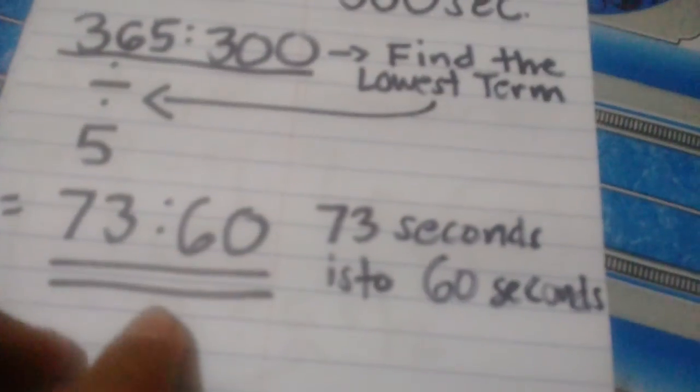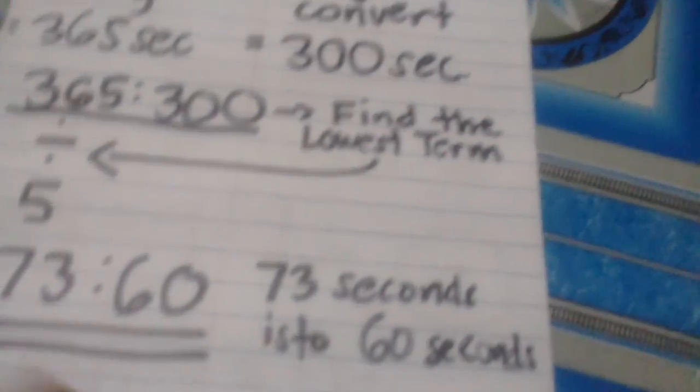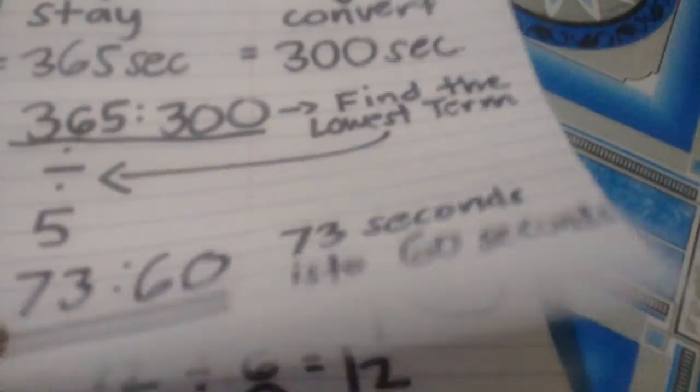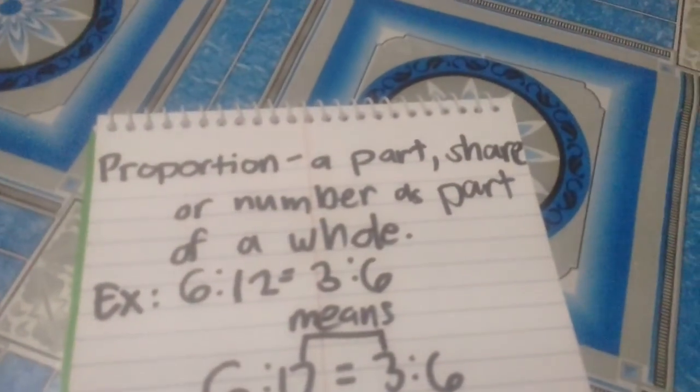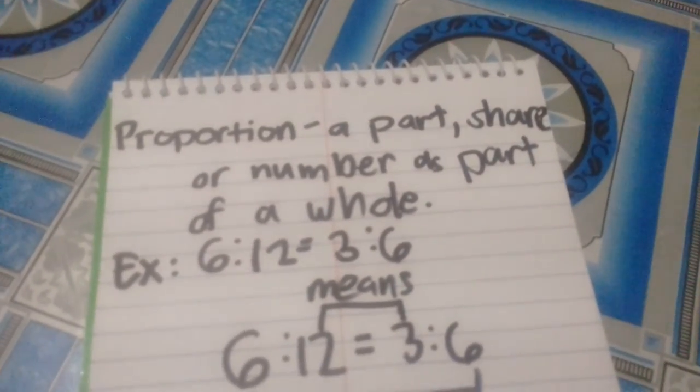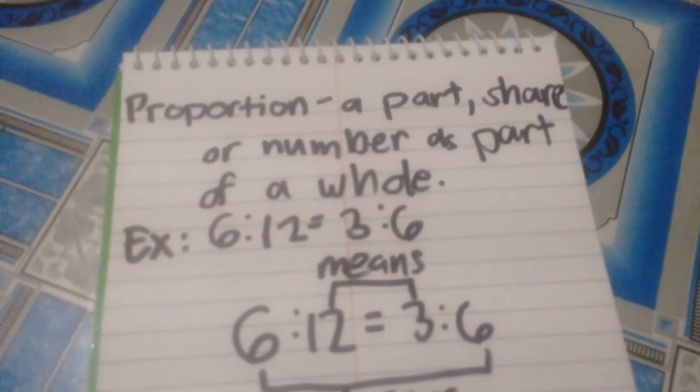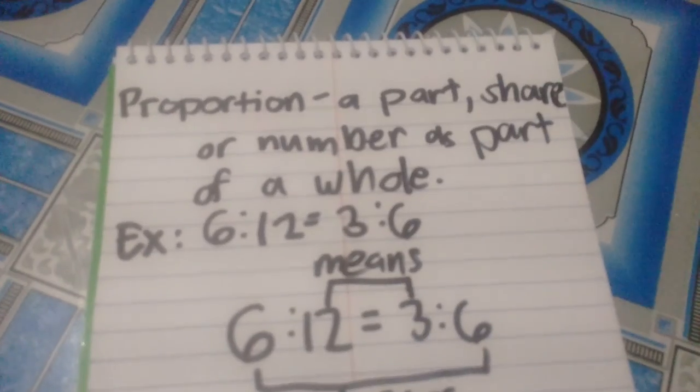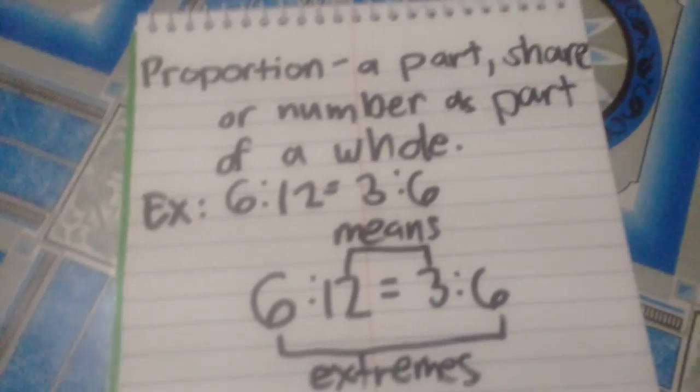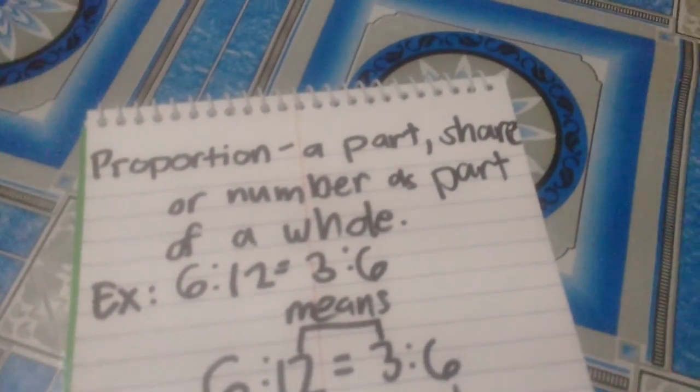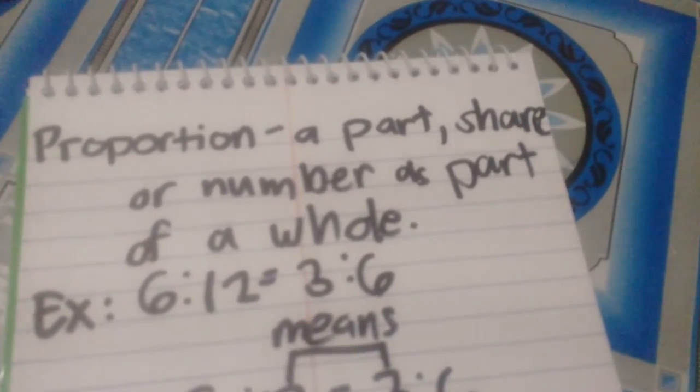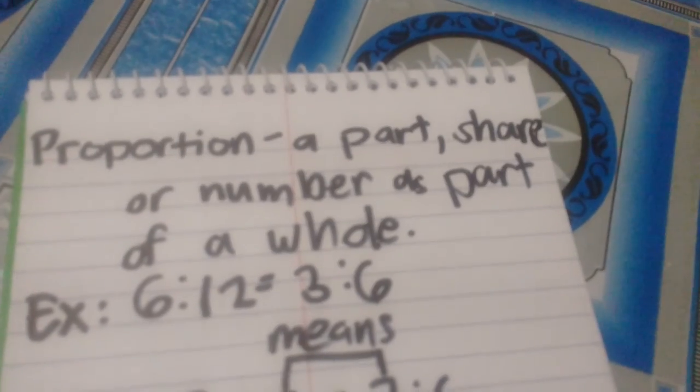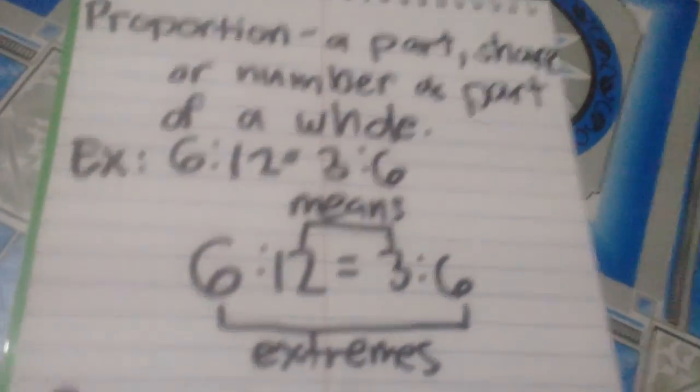Next, proportion. Proportion is much bigger than ratio because ratio is just a part of proportion. Proportion is a part, share, or number as part of a whole.